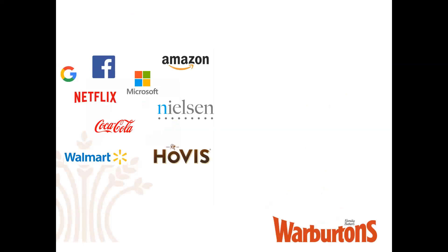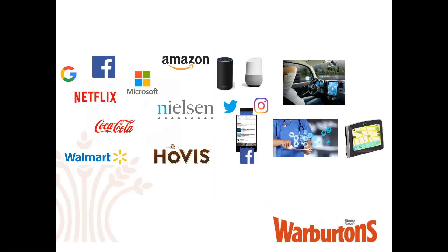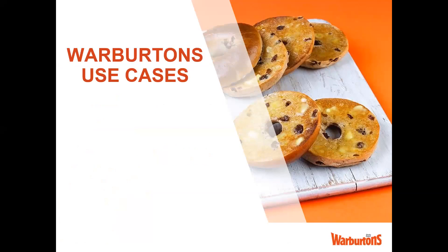We've all heard of many, if not all, of these companies — some of the biggest in the world. Even one of our competitors is on there: Hovis. Make no mistake, your competitors, if they haven't already, are probably looking into ways machine learning can help them get ahead. Look at some of the real-world examples many of us will have heard of: virtual personal assistants such as Alexa and Google Home, social media feeds driven by machines learning patterns in your behaviour, alongside self-driving cars, medical diagnosis, and traffic predictions. Companies are becoming heavily invested in this technology, and if the likes of some of the world's biggest companies and even our competitors are, we need to understand what machine learning can do for us as well.